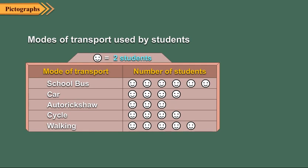There are six symbols against school bus. So, it means number of students using school bus is equal to 6 into 2, which is 12.